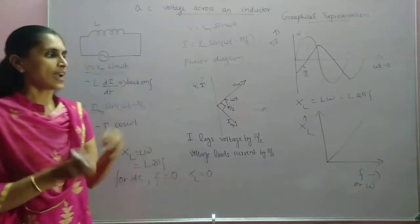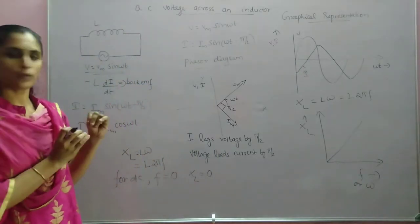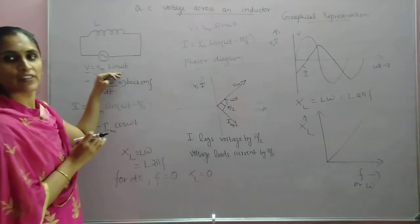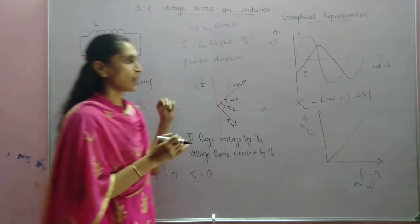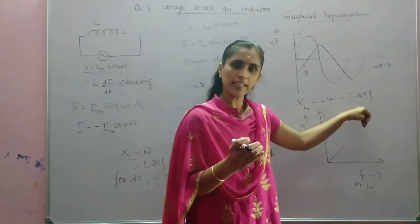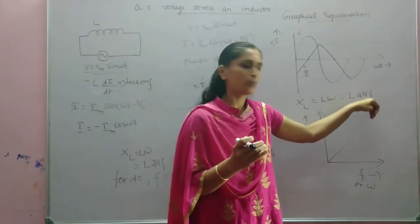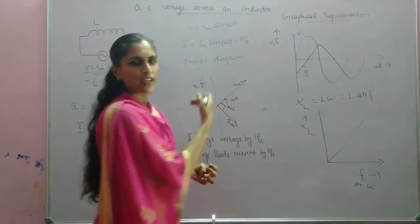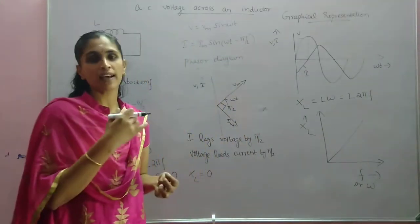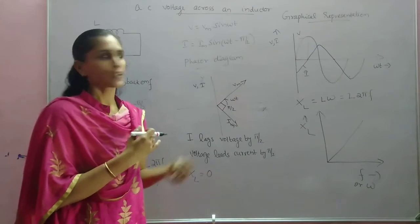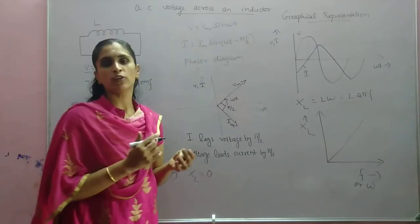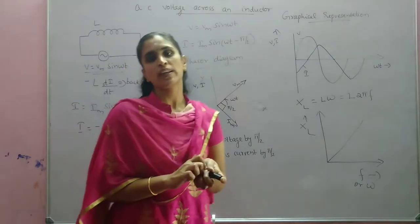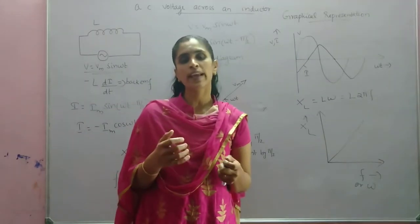In problems based on this, they will specify the frequency. By knowing the frequency you can find XL equals L times 2πf. Then you can substitute and find the current or whatever value is asked. This concludes AC voltage applied across an inductor. Next we will discuss AC voltage applied across a capacitor.